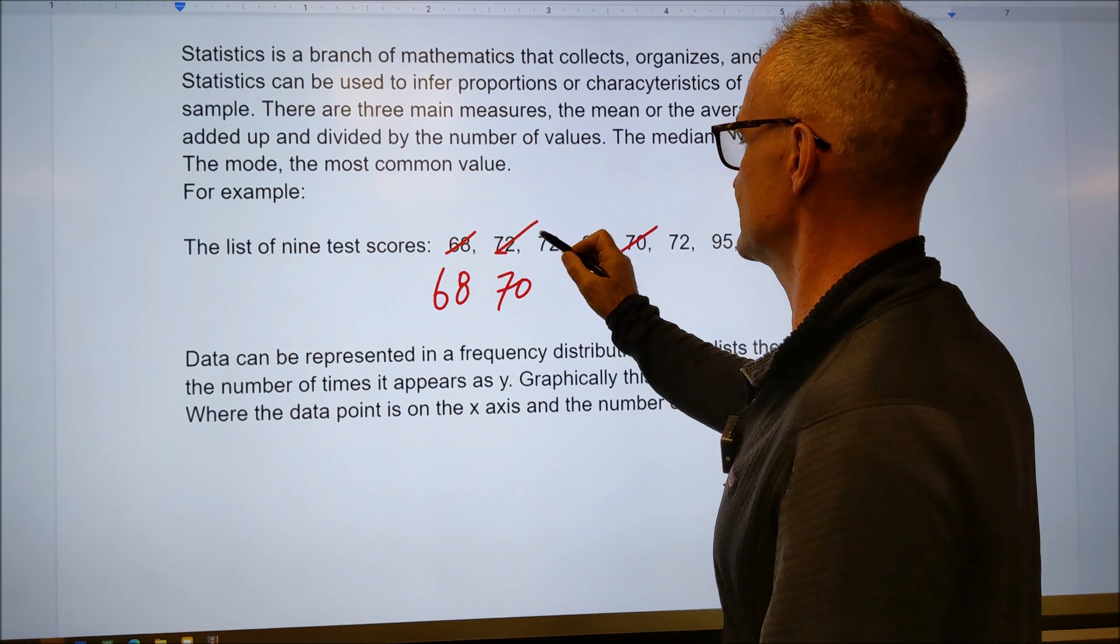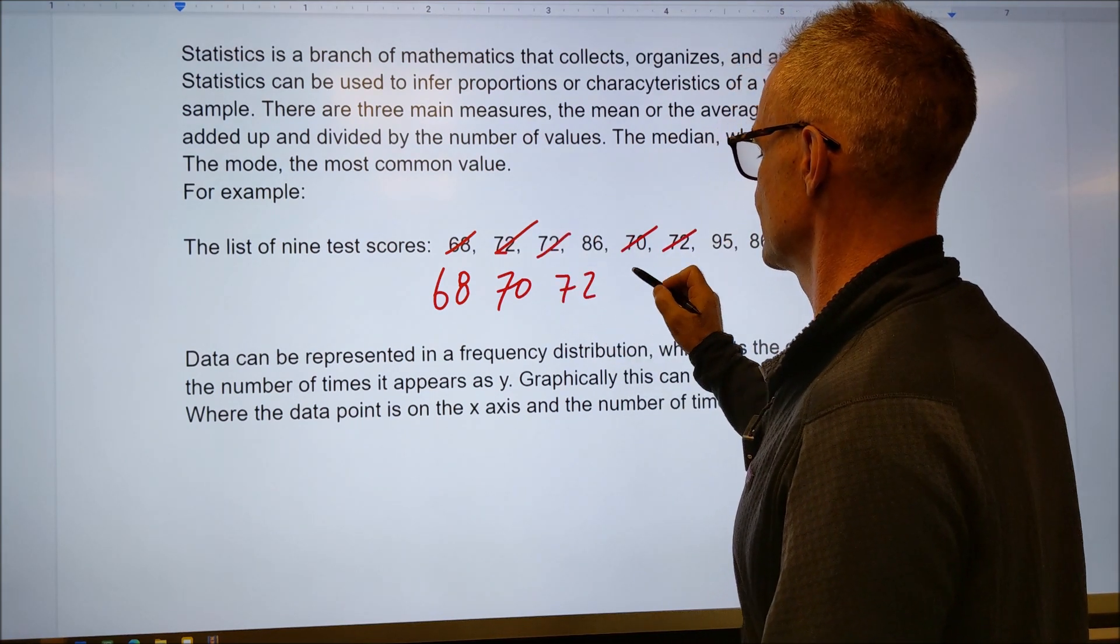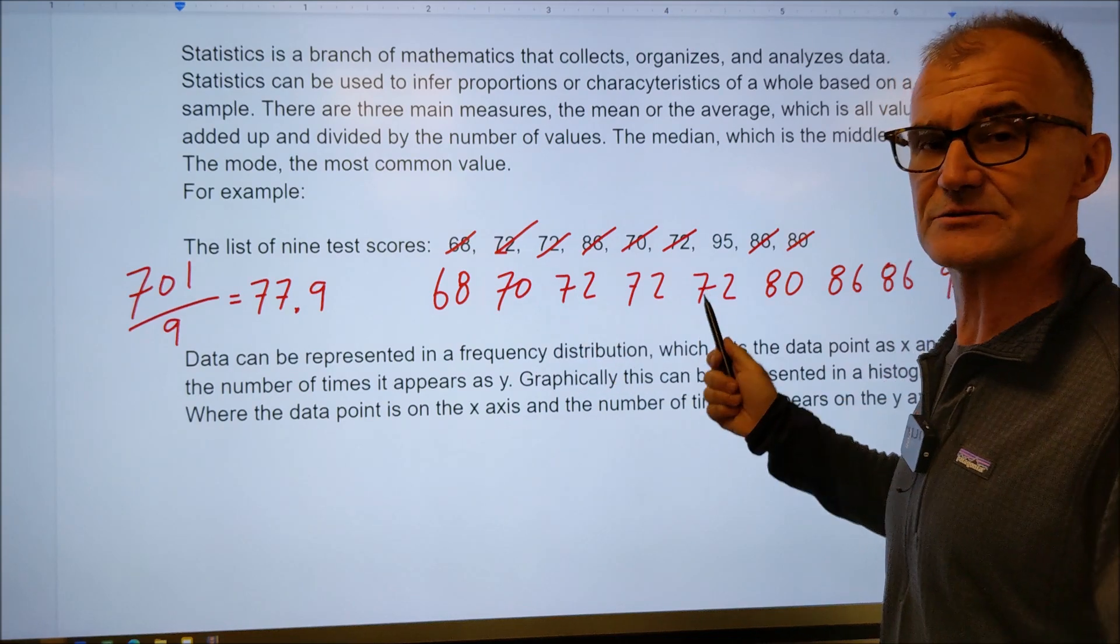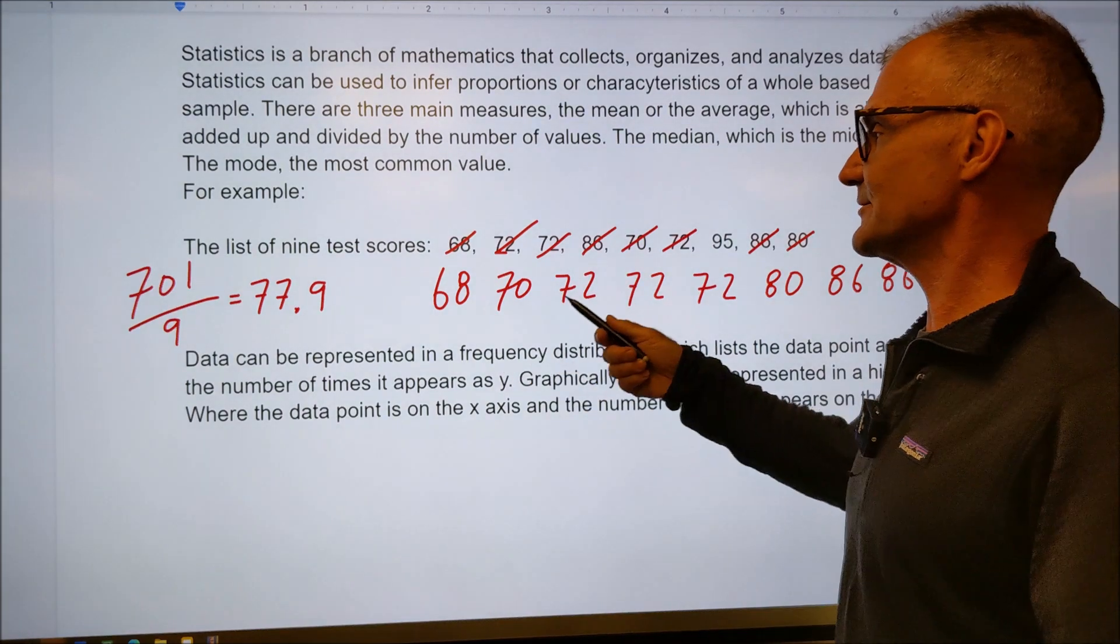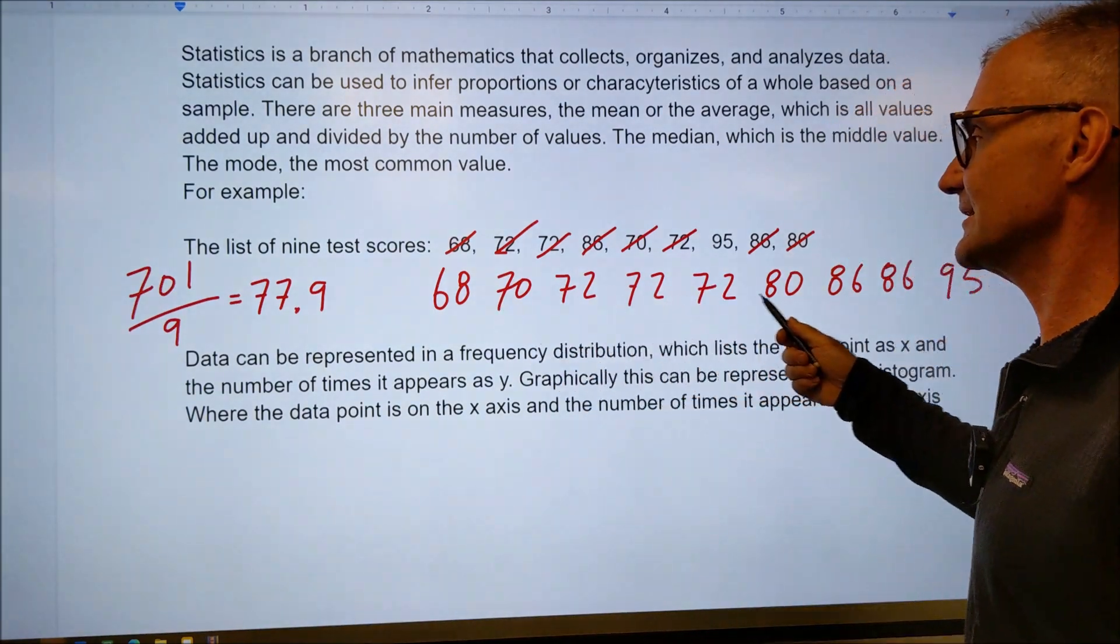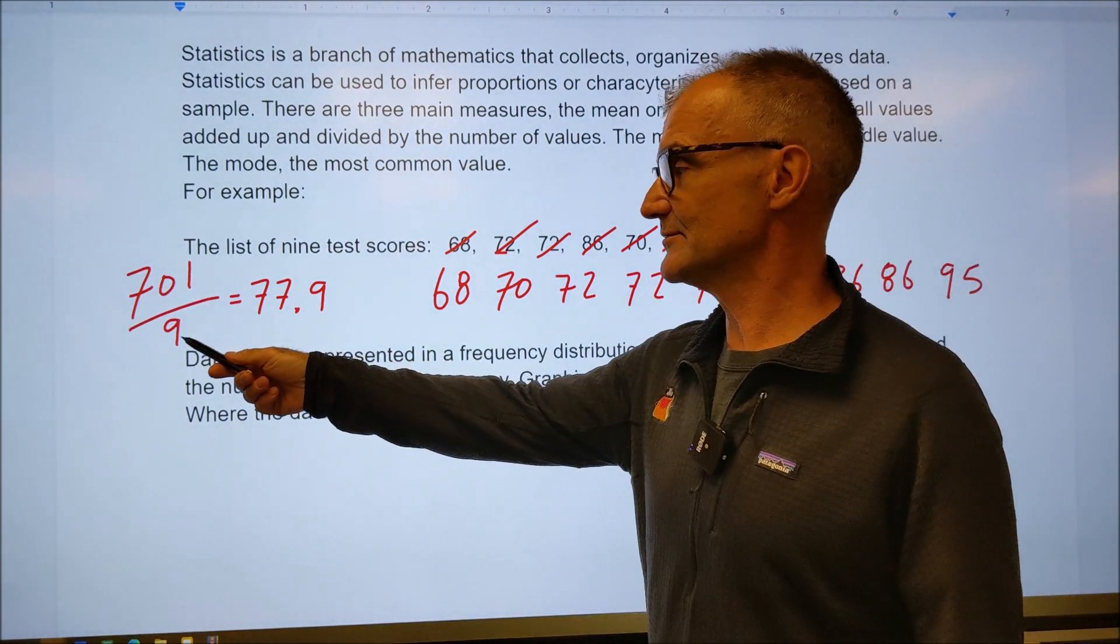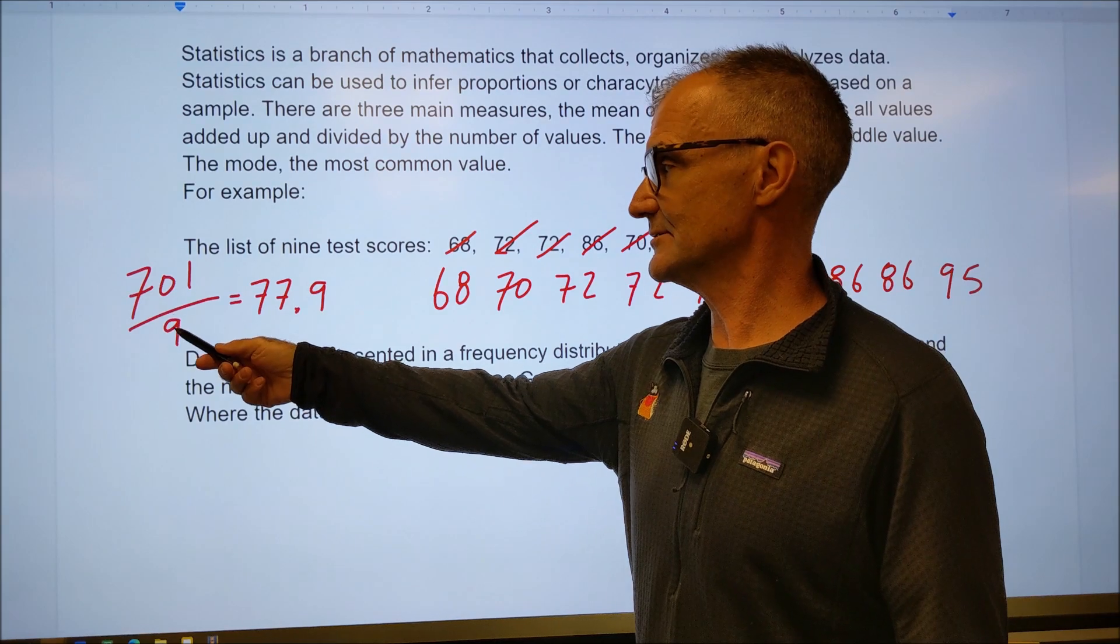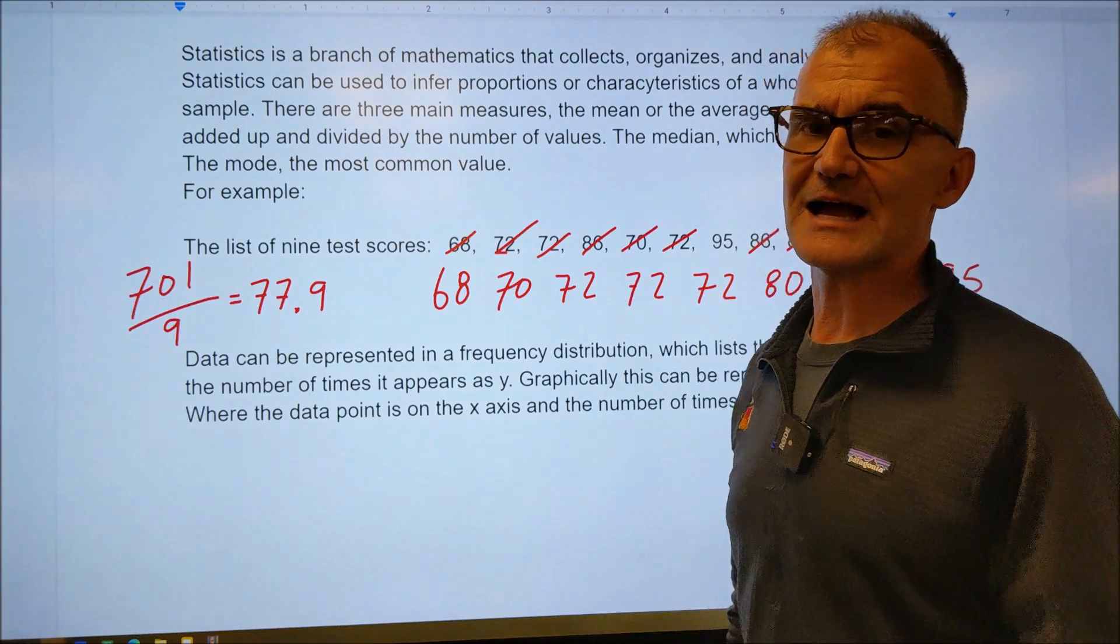Let's say I have a list of nine test scores right here. First thing I want to do is I want to put them in numeric order. So I have the 68. Next largest one is a 70. Next after that is a 72. I have three of those. So one, two, three, and 95. Okay. After I have all of these scores in numeric order, the first thing I'm going to do is find the average. That is the sum of all the values. So I add all nine of these values up. That adds up to 701. Then I divide it by the number of values, usually represented with the letter N. N is equal to nine. So there are nine values. 701 divided by nine is 77.9. And that's my average score.